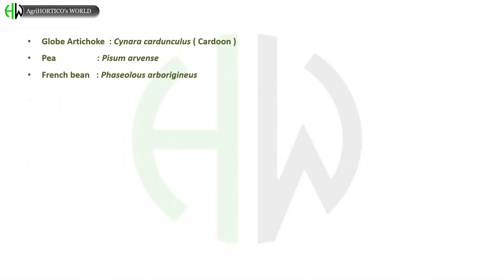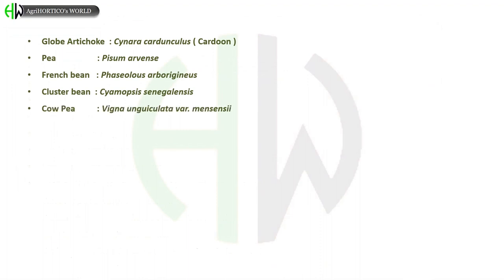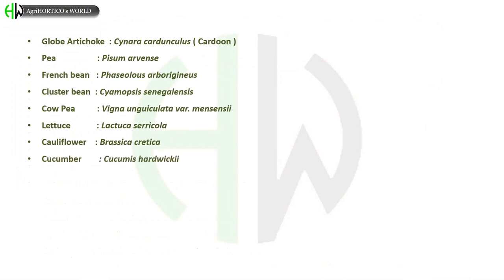Pea – Pisum sativum. French bean – Phaseolus aboriginalis. Cluster bean – Cyamopsis senegalensis. Cow pea – Vigna unguiculata variety menseis. Lettuce – Lactuca serriola. Cauliflower – Brassica cretica. Cucumber – Cucumis hardwickii.